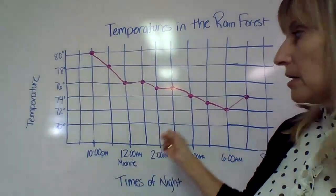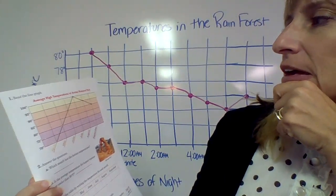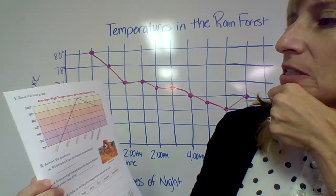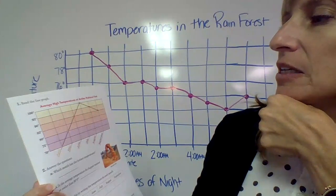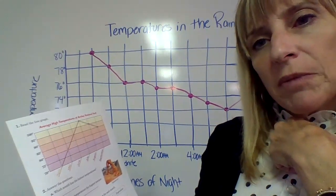Over here are the temperatures, and down here now we're doing months, not doing time like on this one. We're doing months. And then after I look at my graph, I see it goes 70, 75, 80, 85, 90, 95, 100.